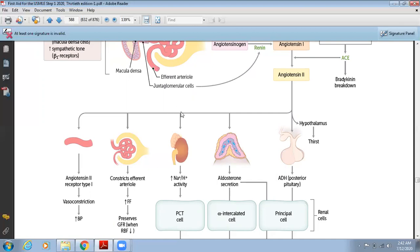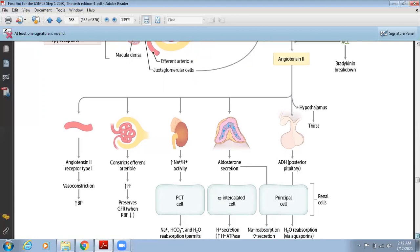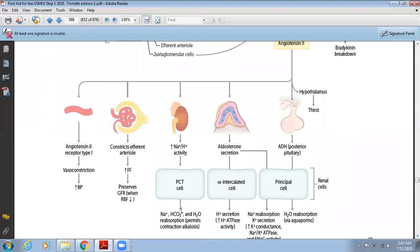The third function is it acts on the proximal convoluted tubules of the nephron and causes sodium-hydrogen exchange activity. This leads to sodium bicarbonate and water reabsorption, promoting contraction alkalosis.